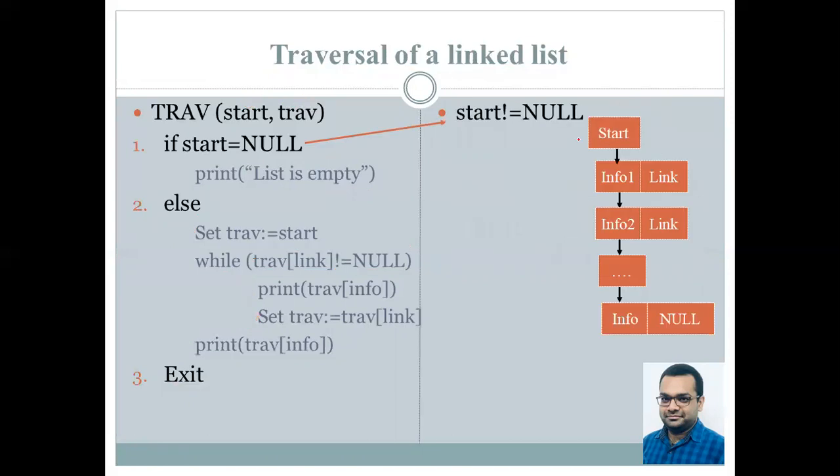Let's see. Suppose you are given this linked list. We can clearly see that start's value is not null. Therefore, this statement will not be executed and the control will jump to the else part.